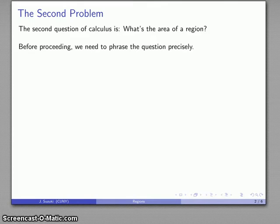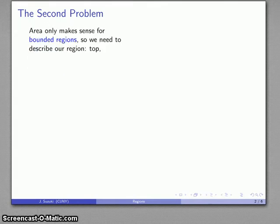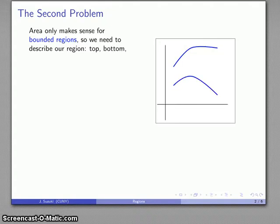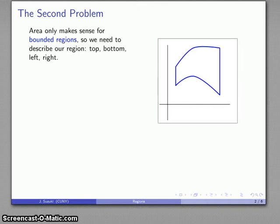We need to think about what we actually mean by a region. Area only makes sense if we're looking at what are called bounded regions, so we need a region where there are boundaries. Conventionally, we can view those boundaries as being a top part of the region, a bottom of the region, a left endpoint, and a right endpoint.